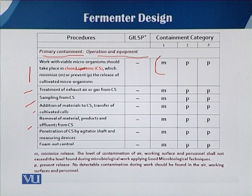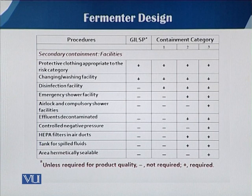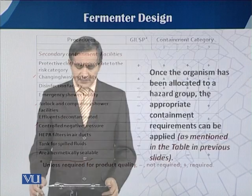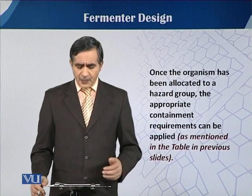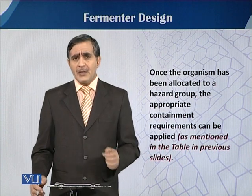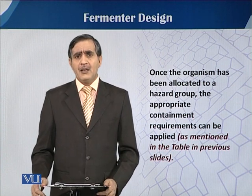In this table, M means minimum release and P means prevent release — we must prevent any kind of release, while in M cases a minimum release can be managed. Secondary containment facilities are also required at different containment levels, as shown in the table. Once the organism has been allocated to a hazard group, the appropriate containment requirements from the Frommer et al., 1989 primary and secondary containment procedures can be applied.